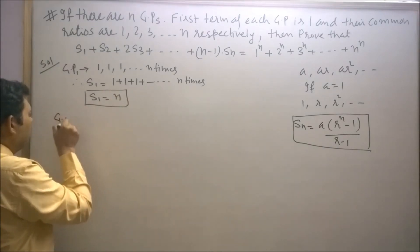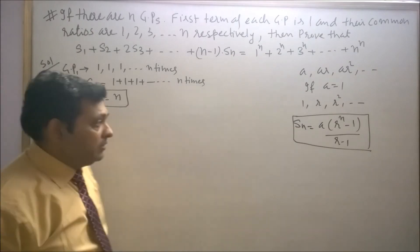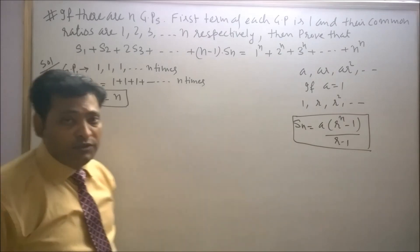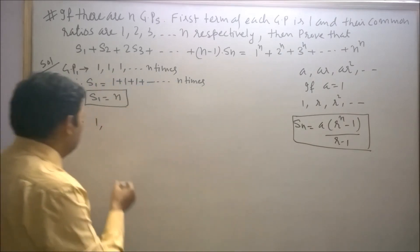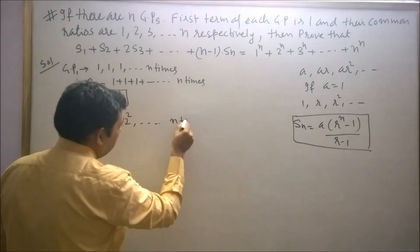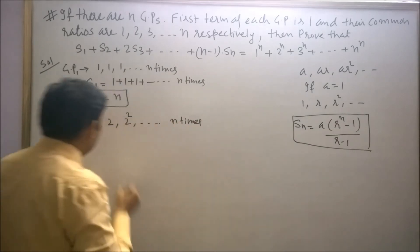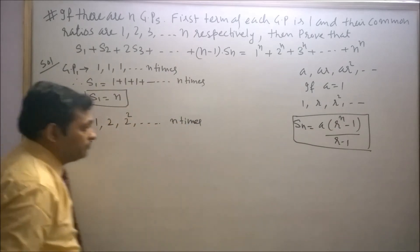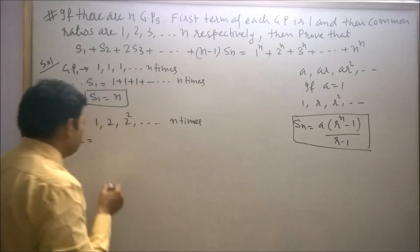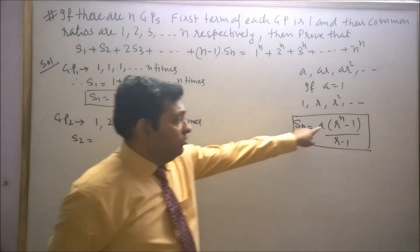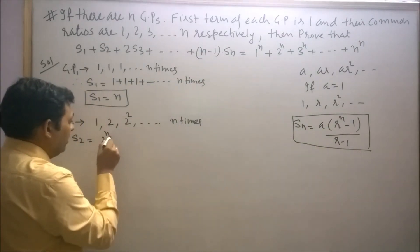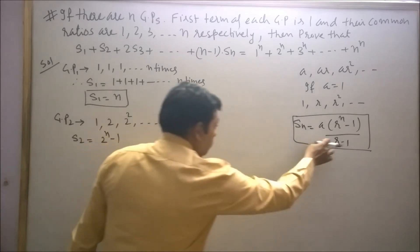Similarly, GP2 can be represented using this sequence. The first term is 1 and the common ratio of this second GP is 2. So this will be 1, 2, 2 squared, and so on to N terms. Therefore S2 is equal to (2 to the power N minus 1) upon (2 minus 1), which equals 2 to the power N minus 1.